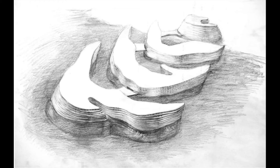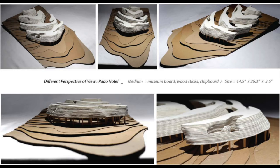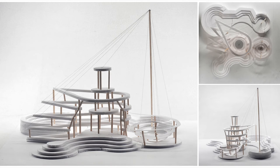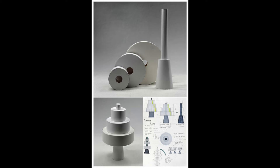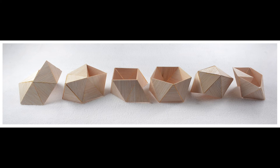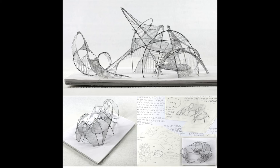Number four: tools. Make sure you have a sharp exacto knife with replacement blades, scissors, rulers, different types of glue, and two-sided tape. Number five: patience. Take your time with construction. Make sure it's clean, precise, and skillfully assembled. The quality of your model is very important, and it will take a lot of practice and patience.